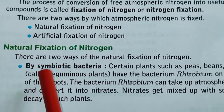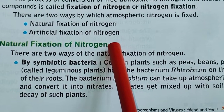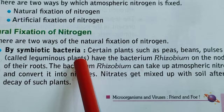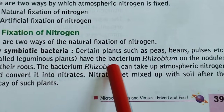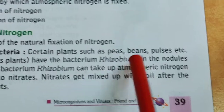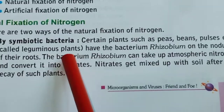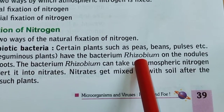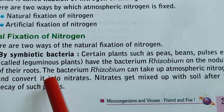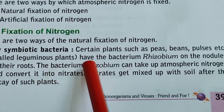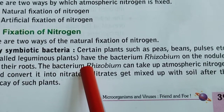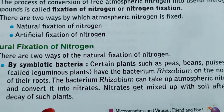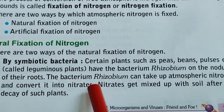For natural fixation of nitrogen, first is by symbiotic organisms — bacteria. Certain plants such as peas, beans, and pulses, called leguminous plants, have the bacterium genus Rhizobium on the nodules of their roots. Rhizobium is the singular form of bacteria. This bacterium can take up atmospheric nitrogen and convert it into soluble nitrate form in the soil.